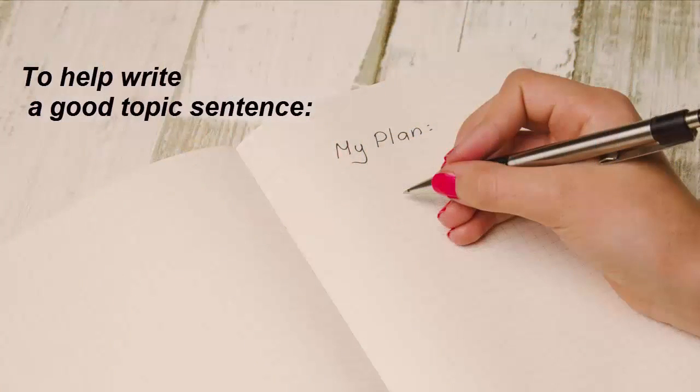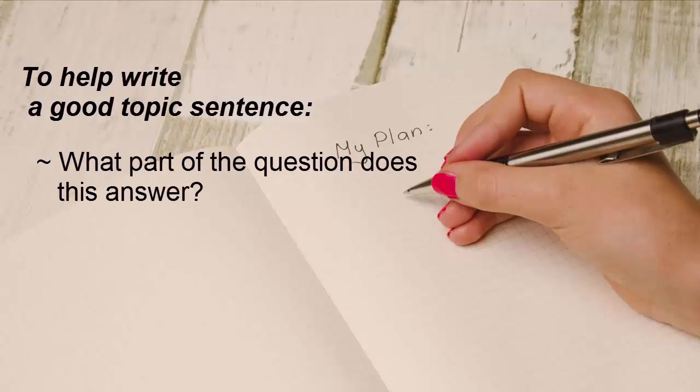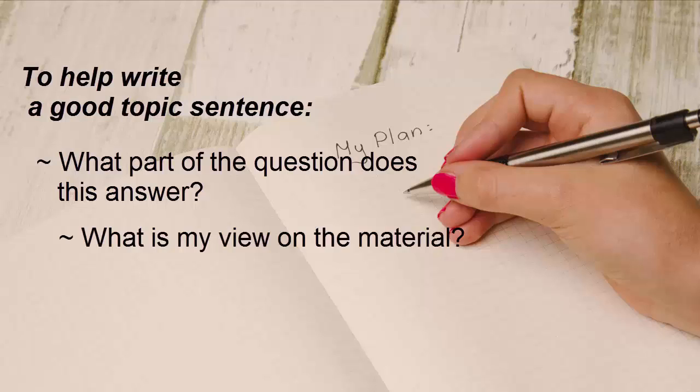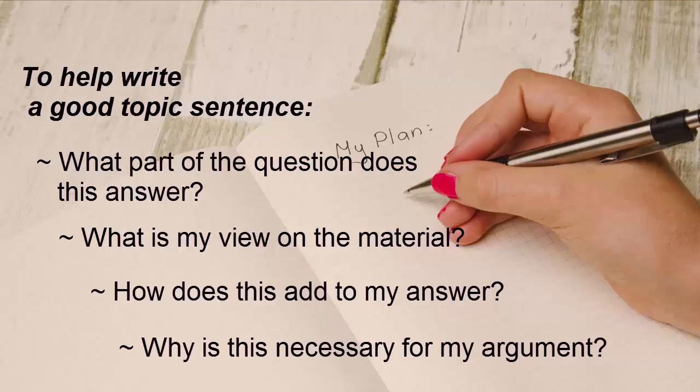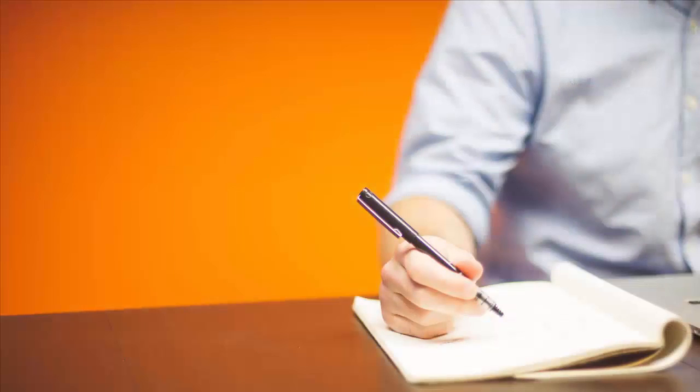To help write a good topic sentence, you could ask yourself: What part of the question does this paragraph answer? What is my view on the material in this paragraph? How does this paragraph add to my answer? Why is this paragraph necessary for my argument? Once you've written your topic sentence and placed it at the start of your paragraph, it may be useful to check over the rest of your paragraph.